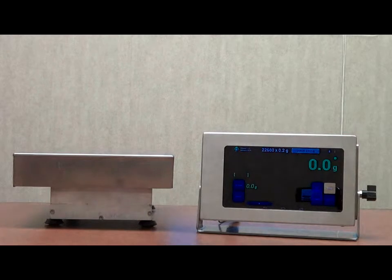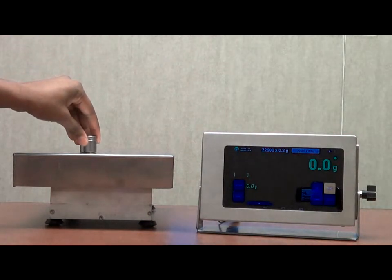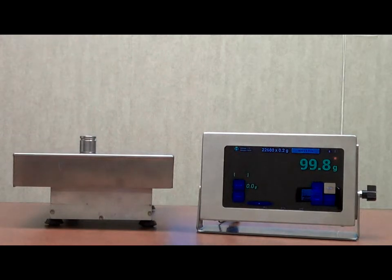I'm going to place 100 grams on the scale. You'll notice the red light, it means it hasn't stabilized yet. Okay, now it's green, so we're good.